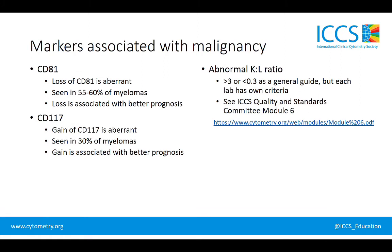Additionally, we should talk about CD81, CD117, and of course our light chain ratios. Normal plasma cells express CD81, so the loss of CD81 is again aberrant. It is seen in the majority of myelomas and its loss is associated with a better prognosis. With CD117, also known as CKIT, its gain is aberrant. It's seen in a minority of myelomas and also associated with a better prognosis. Of course, we have our kappa to lambda ratio, in which greater than 3 or less than 0.3 is used as a general guide, but know that each lab has their own criteria for determining what's abnormal.